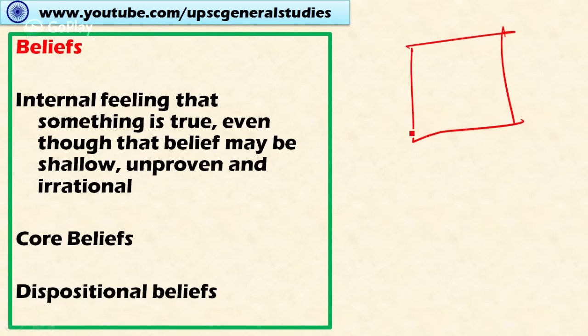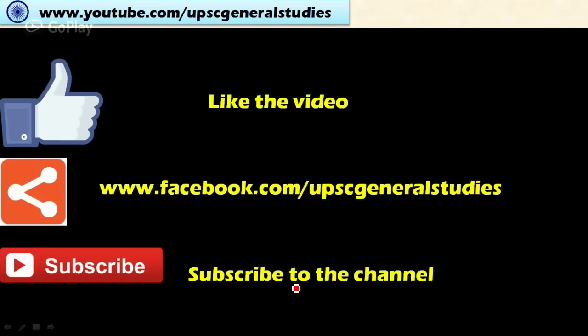Belief can be divided into core beliefs and dispositional beliefs. Core beliefs act always within the thinking and thought process of the individual, whereas dispositional beliefs are influenced by society — your parents, teachers, and society from childhood influence your beliefs. What you absorb from your society forms your dispositional beliefs. This covers the important terms used in ethics.